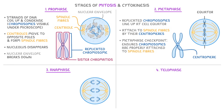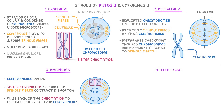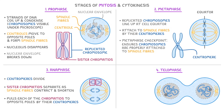Moving on to anaphase: during this stage the centromeres divide and the sister chromatids separate, as the spindle fibers contract and shorten. This pulls each of the chromatids to opposite poles of the cell. The chromatids are pulled by their centromeres, which gives them a sideways V-shape as they move.